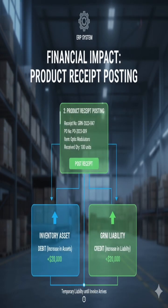When a product receipt is posted, it typically triggers two main updates. First, an inventory update: the physical count of items in the warehouse is increased and the corresponding inventory asset account is debited. Second, a GRNI update: a Goods Received Not Invoiced liability account is credited. This acts as a temporary liability, acknowledging that the company owes the supplier for the goods received before the official supplier invoice arrives and is entered.